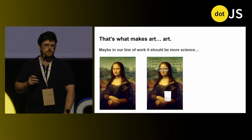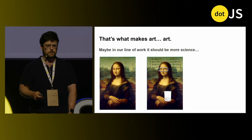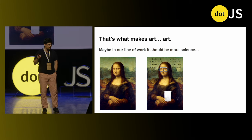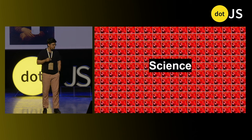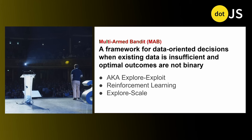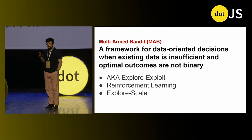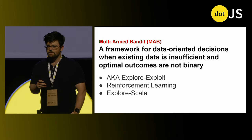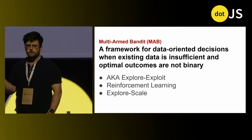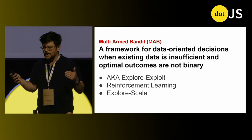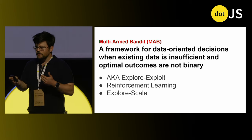But in our line of work, while we want to appreciate the art, we also want to approach our problems with a more rigorous standard — a structure that normalizes our expectations and ultimately yields verifiably optimal outcomes for the most part. So let's talk about the science of today's presentation. We're going to be talking about the multi-armed bandit algorithm, which is a framework for data-oriented decisions when existing data is insufficient and optimal outcomes are not necessarily binary. This is often referred to as the explore-exploit algorithm. You might refer to it as reinforcement learning, or you could call it explore-scale.